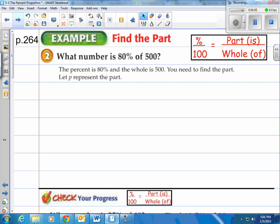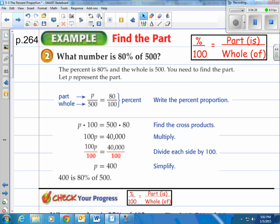How about this? It says finding the part. What number is 80% of 500? Well the percent is 80% and the whole is 500, you need to find the part. Let P represent the part. So if P is the part, 500 is the whole, and we have 80%, we can write that as 80 over 100. Then of course we use our cross-multiplying to solve. When you get down to 400, that is our part.